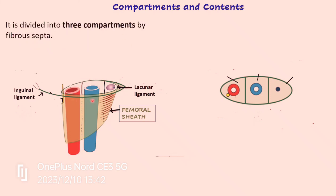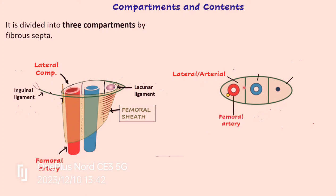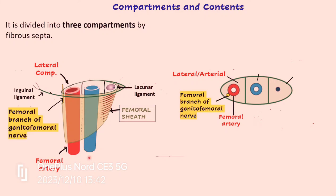The femoral sheath is divided into three compartments by two fibrous septa. This is a cross-section through the upper part of the femoral sheath, showing medial and lateral sides. The lateral-most compartment is also known as the arterial compartment because the femoral artery passes through it. Along with the femoral artery, antero-laterally in this compartment, you also have the femoral branch of the genitofemoral nerve passing through it.